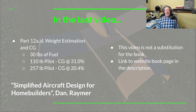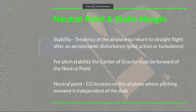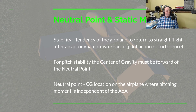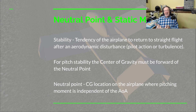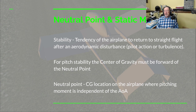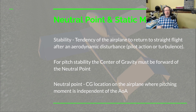Now let's get to the meat of this video. We're going to work on neutral point and static margin. Stability is the tendency of the airplane to return to straight flight — not necessarily level, but straight — after an aerodynamic disturbance such as a gust of wind, a pilot maneuver, or an accidental nudge of the rudder pedal or stick. Stability will make the airplane return back to straight flight.